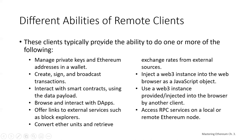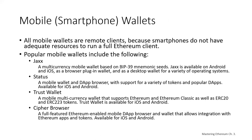Mobile smartphone wallets are very popular for Ethereum. All mobile wallets are remote clients because the smartphone doesn't have adequate resources to run a full Ethereum client. Popular mobile wallets include Jaxx, a multi-currency mobile wallet based on BIP39, available on Android and iOS, as a browser plugin, and as a desktop wallet. Status, a mobile wallet and decentralized app browser with support for a variety of tokens and dApps, available on iOS and Android. Trust Wallet, a mobile multi-currency wallet supporting Ethereum, Ethereum Classic, ERC20, and ERC223 tokens, available for iOS and Android. And Cipher Browser, a full-featured Ethereum-enabled mobile dApp browser and wallet allowing integration with Ethereum apps and tokens, available for iOS and Android.